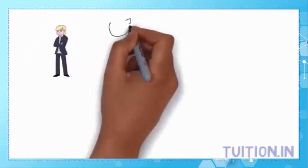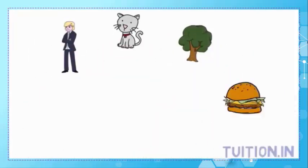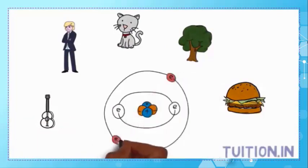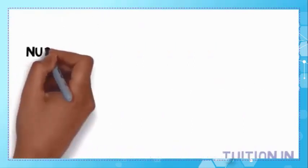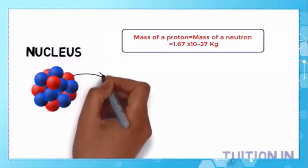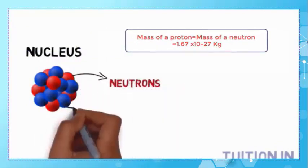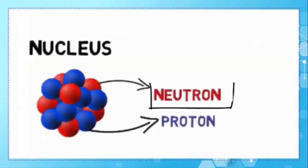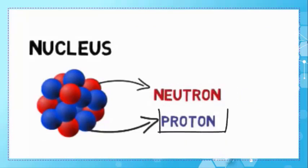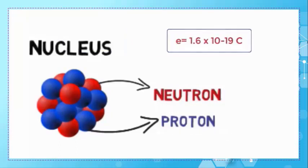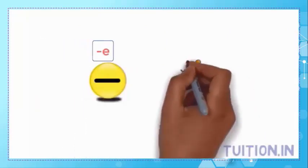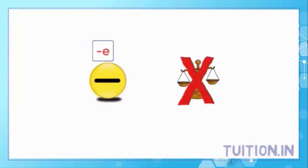Up till now, you've learned that an atom is the basic building block that makes up all matter, and that each atom consists of three subatomic particles, each with a specific mass and a charge. Starting with the nucleus, protons and neutrons have nearly the same mass. The mass of a proton is 1.67 × 10⁻²⁷ kg. Neutrons are neutral entities; however, protons are charged — the charge of a proton is +E, where the absolute value of E equals 1.6 × 10⁻¹⁹ C. Revolving around the nucleus are the electrons, which have a charge of −E and negligible mass.